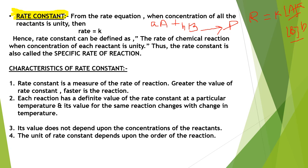If the concentration of reactants — concentration of A and concentration of B — is unity, meaning their value is one, then the rate of reaction R will become equal to K. This rate constant is also known as specific rate of reaction. The rate is directly proportional to K, meaning higher the value of rate constant, the faster the reaction.